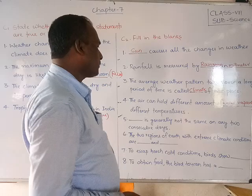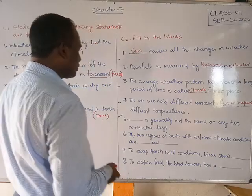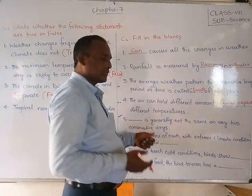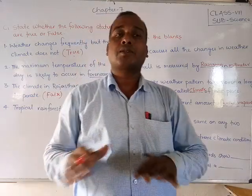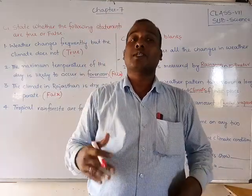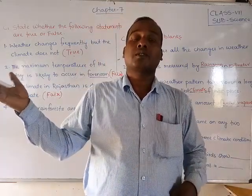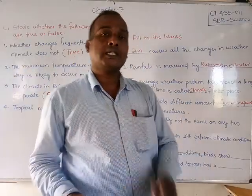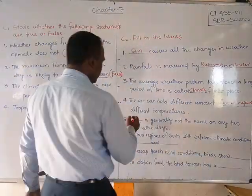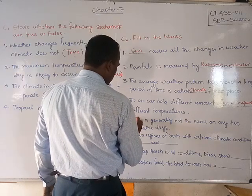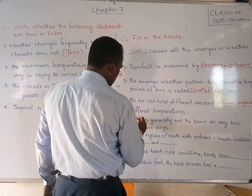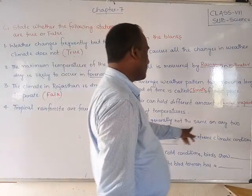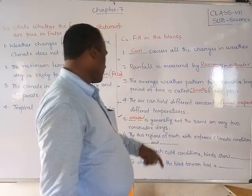Fifth blank: dash is generally not the same on any two consecutive days. Climate is the same, but weather is not the same. Today it may be cloudy, tomorrow it may be sunny — weather keeps changing day to day. So on any two consecutive days, the answer is: weather.